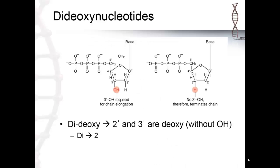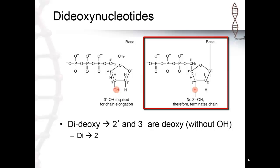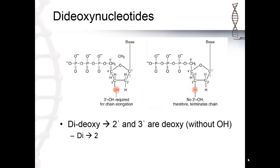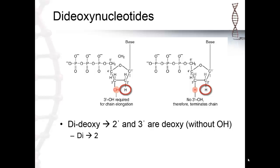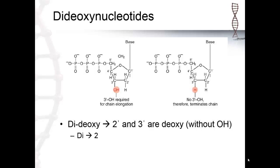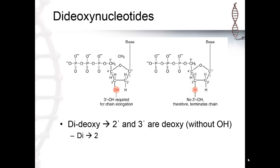In the Sanger method, modified nucleotides are used. These nucleotides are called dideoxy because not only is the 2nd prime end of the ribose sugar without an OH group, but the 3' end is also without an OH group. Since the 3' OH group is required to elongate the DNA chain by adding the phosphate end of the next nucleotide to it, without it the DNA chain will end.